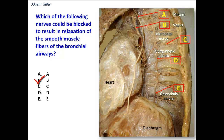These sympathetic and parasympathetic fibers are distributed together with the branching of the bronchial tree. But it is the parasympathetic fibers derived from the vagus nerve which will cause the narrowing of the bronchial tree, and therefore, when they are blocked, they will result in relaxation of the smooth muscle fibers of the bronchial airways.